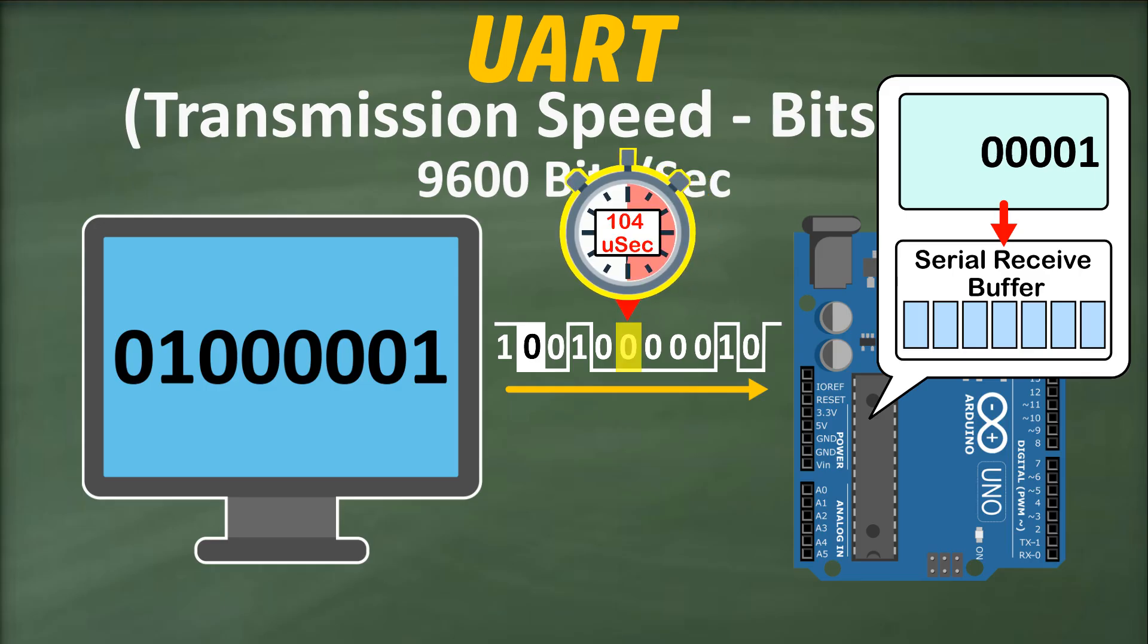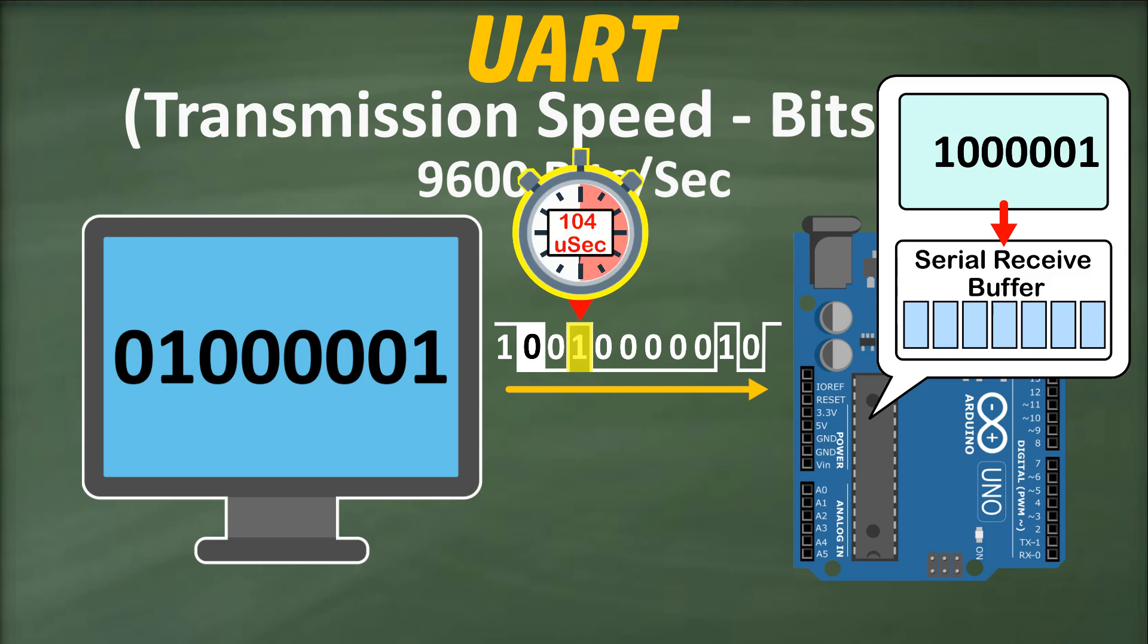As data bits stream in from the computer, a specialized hardware component inside the ATmega328 microcontroller assembles every eight bits into a byte and stores them in the serial receive buffer, a temporary memory area that can hold up to 64 bytes. From this buffer, we can read the data one byte at a time.